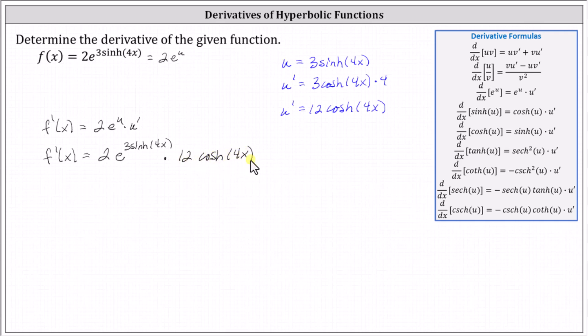Let's go ahead and multiply the two and the 12 and write f prime of x as f prime of x equals 24 e to the power of three hyperbolic sine four x times hyperbolic cosine four x.